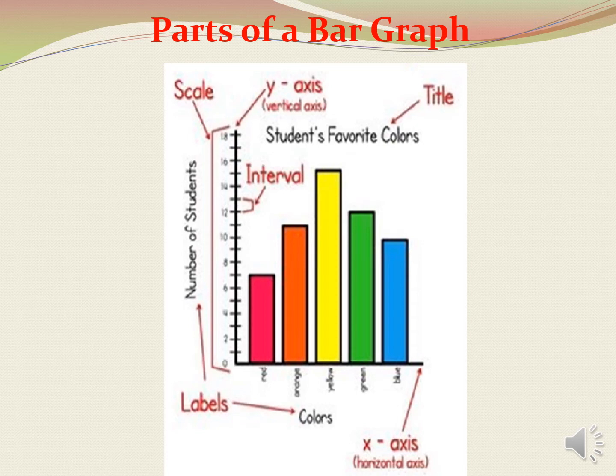Second, we have labels. There are two axes which help us to present our information through a bar graph. First is x-axis, second is y-axis. X-axis is called the horizontal axis, which is also known as the sleeping line. Y-axis is the vertical axis, that is the standing line. On x-axis you can see the names of the colours, and on y-axis you can see the number of students. So, colours and number of students are the labels.